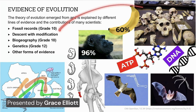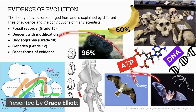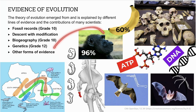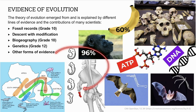We looked at fossil records and descent with modification in Part 1. In this video, we focus on the remaining evidences of evolution. We'll be looking at biogeography, genetics, and other forms of evidence including comparative biochemistry, vestigial organs, and comparative embryology.